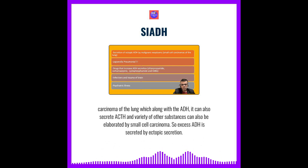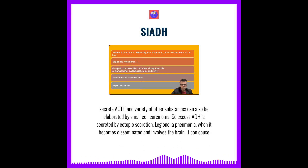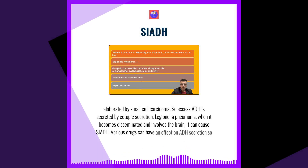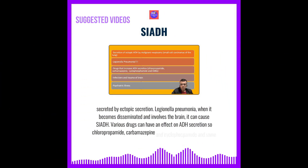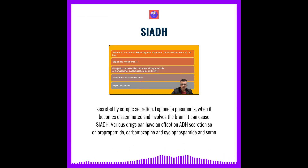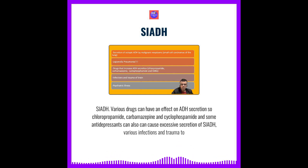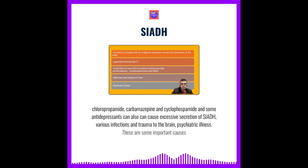Excess ADH can also be secreted due to pneumonia when it becomes disseminated and involves the brain. Various drugs can affect ADH secretion, including chlorpropamide, carbamazepine, cyclophosphamide, and some antidepressants. Various infections and trauma to the brain, as well as psychiatric illness, are also important causes of SIADH.